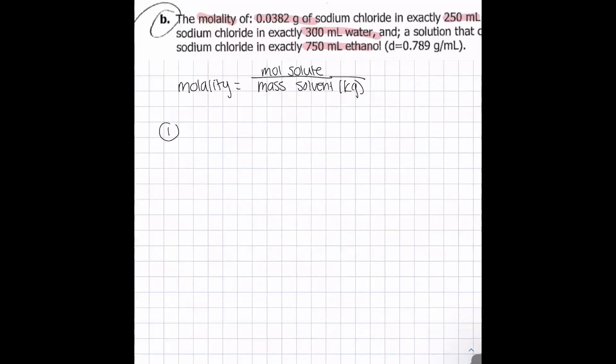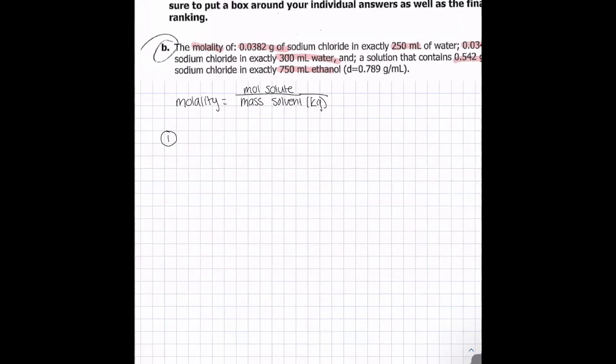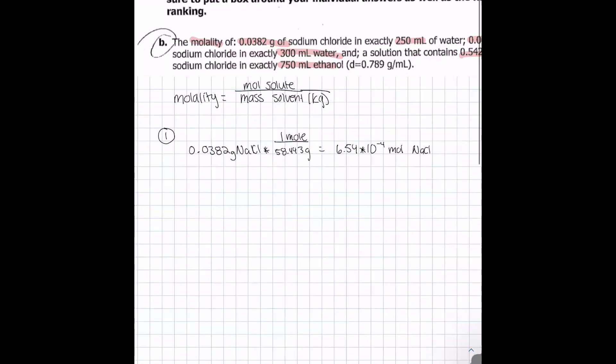For the first part, we have to convert 0.0382 grams of NaCl into moles. We divide by the molar mass, which is 58.443 grams, to get that we have 6.54 times 10 to the negative 4 moles of NaCl, which is our solute, the numerator of the molality equation.